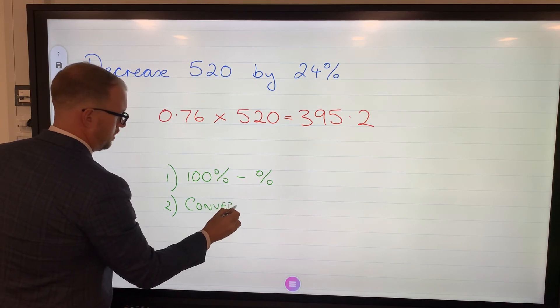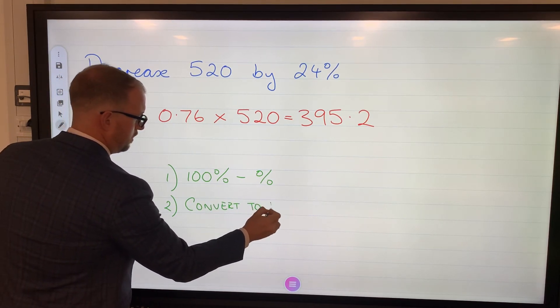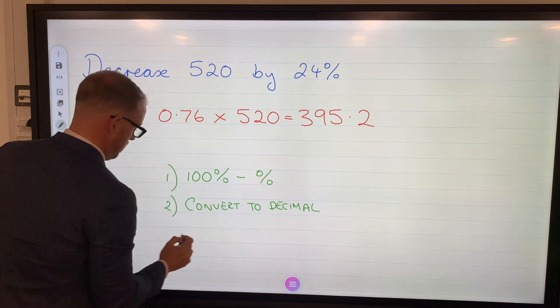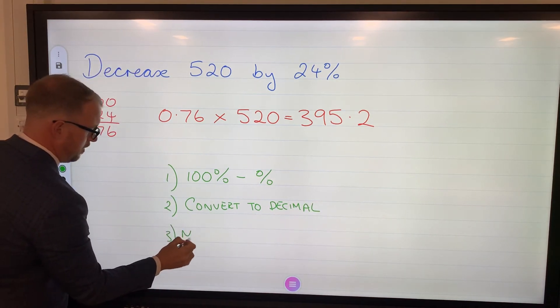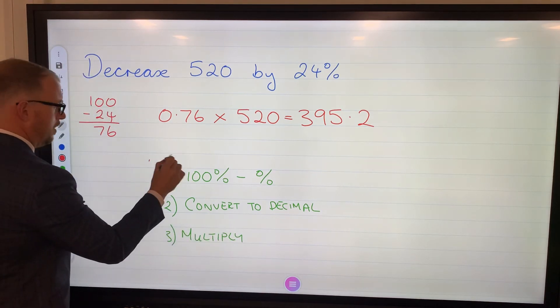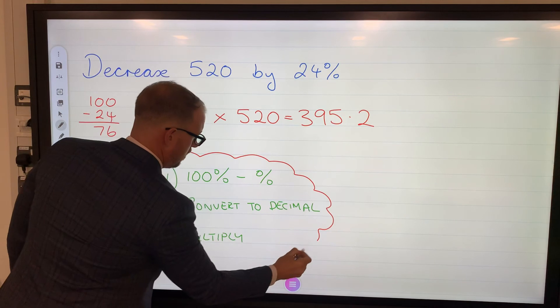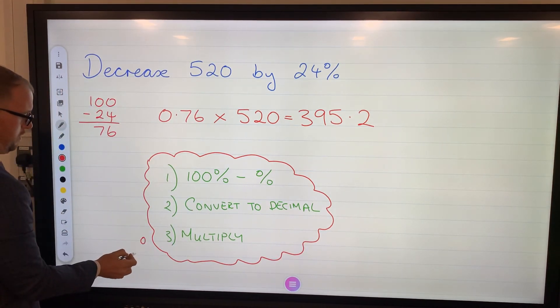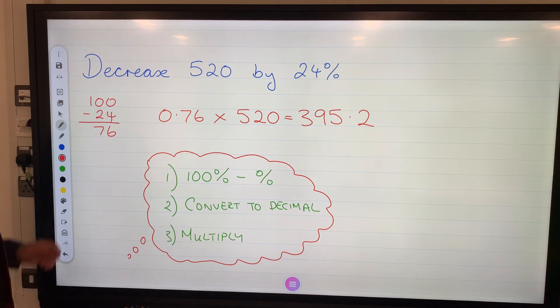So 100 percent subtract your percentage. Convert to decimal. Third step, multiply.